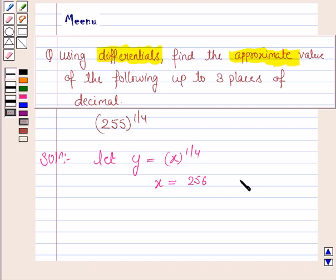And since we need to have x plus delta x as 255, we take delta x as minus 1. So x plus delta x is equal to 255.